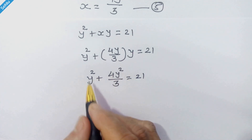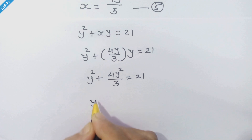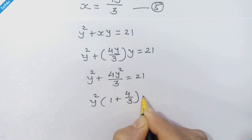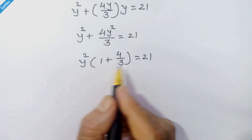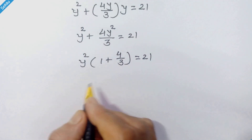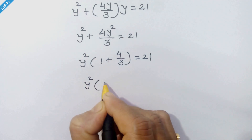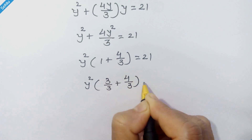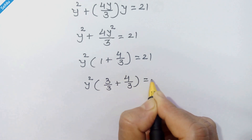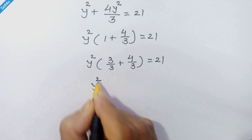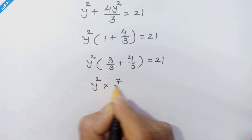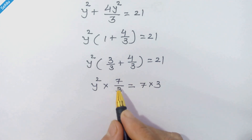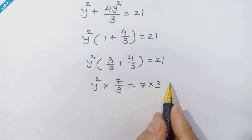So we have y squared plus 4y squared upon 3 is equal to 21. Taking y squared common, we have y squared times (1 plus 4 upon 3) is equal to 21. Let's simplify by taking LCM, so we have y squared times (3 upon 3 plus 4 upon 3) is equal to 21.